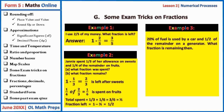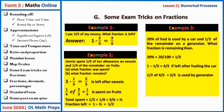Another example: 20% of fuel is used by a car, and half of the remainder is used by a generator. What fraction is remaining? 20% is one fifth, so after the car uses one fifth, four fifths remains. Half of four fifths — which is two fifths — is used by the generator. Total used: 1/5 + 2/5 = 3/5. Therefore the remaining fraction is 1 − 3/5 = 2/5.